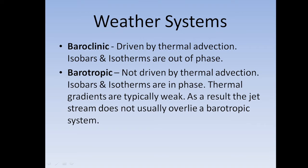In a baroclinic system, isobars and isotherms are out of phase. Barotropic is not driven by thermal advection — isobars and isotherms are in phase. Thermal gradients are typically weak as a result, and the jet stream does not usually overlie a barotropic system.